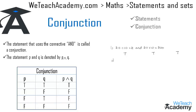Let us consider another example: '10 + 1 = 11 and 10 ÷ 2 = 20.' The first statement is true and the second statement is false, so the truth value for the conjunction of both statements would be false.